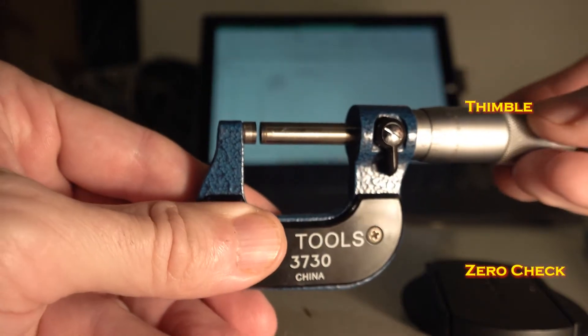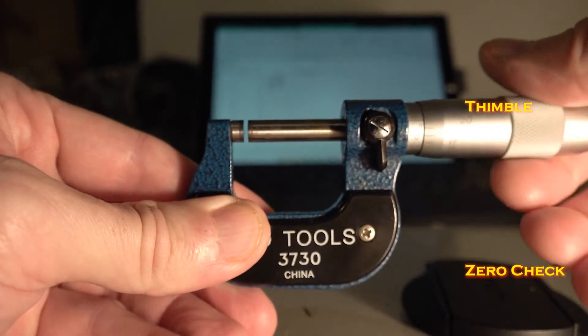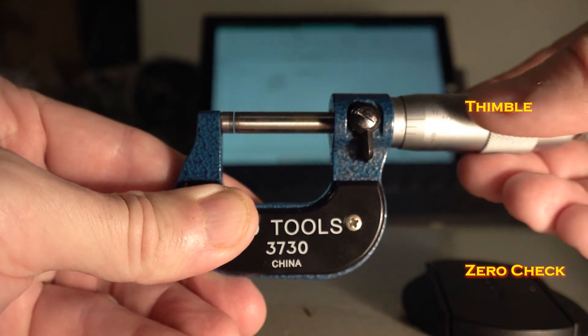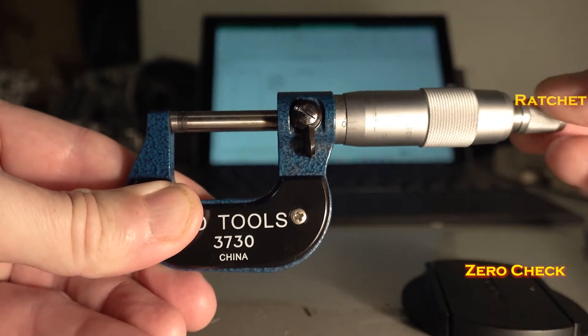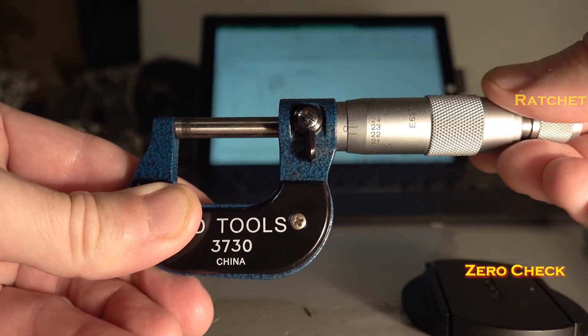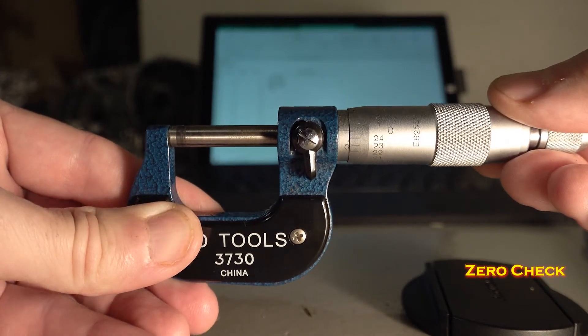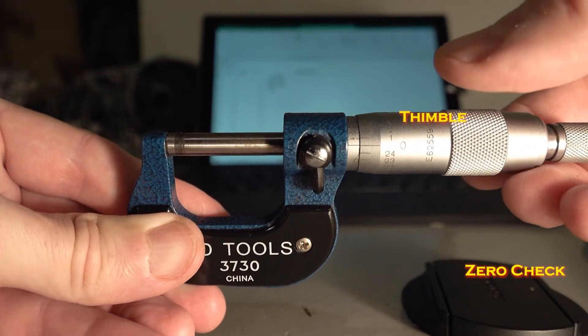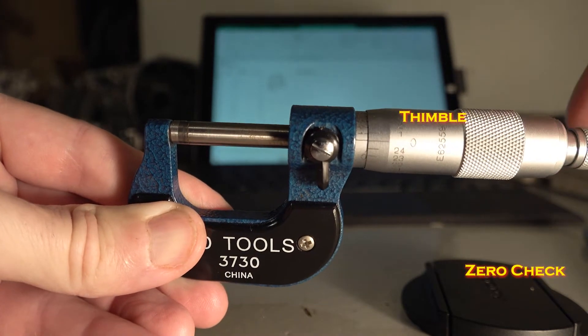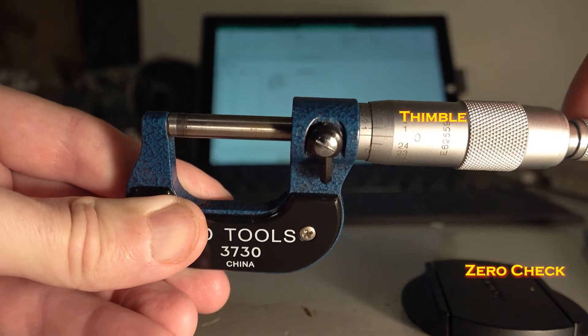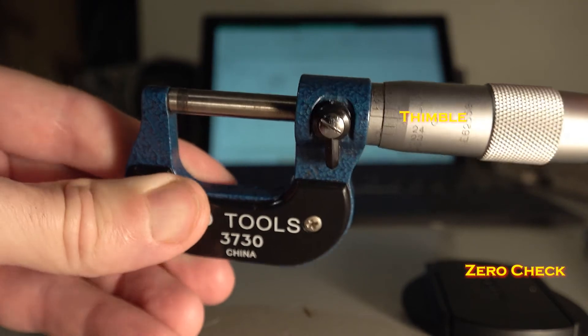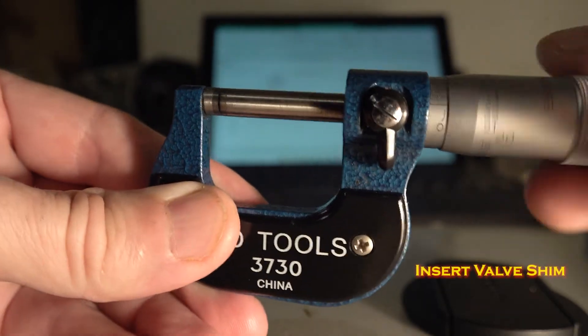The first thing to do is make sure that your micrometer is zeroed out. So if we move it all the way in by rotating the thimble here, and then finish by rotating in the ratchet, what we want to see is that the zero line on the thimble lines up with the zero line across from it on the vernier. Perfect. Now we rotate it back.